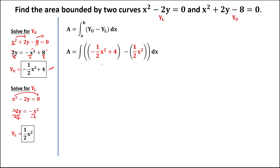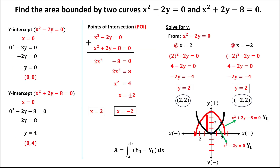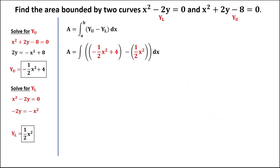The integral is set up as upper y minus lower y. Since the variable is x, we use the x-values for the limits: lower limit negative 2 and upper limit positive 2. Simplifying by omitting parentheses, we have the integral of negative one-half x squared plus 4, minus one-half x squared, with limits from negative 2 to positive 2.